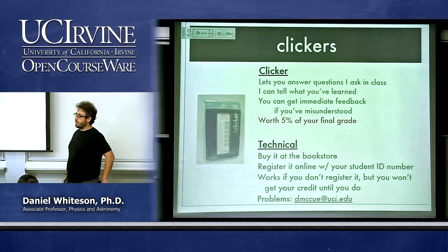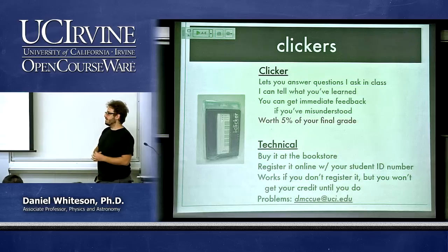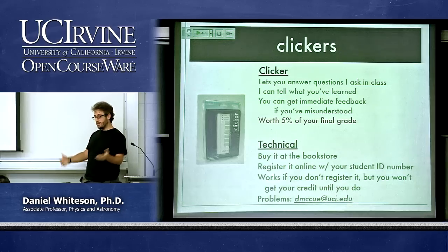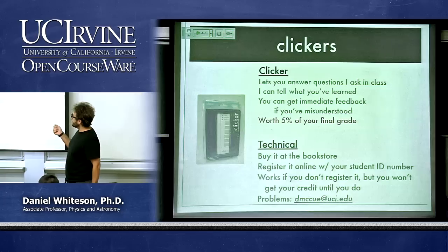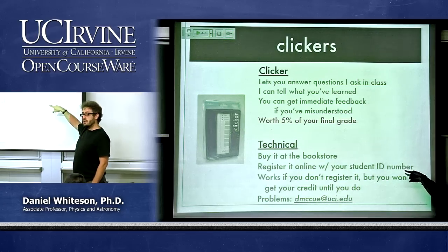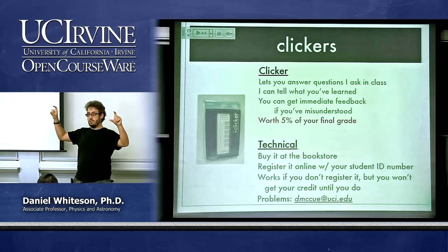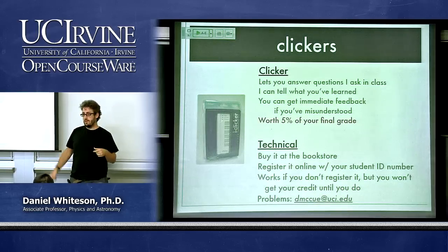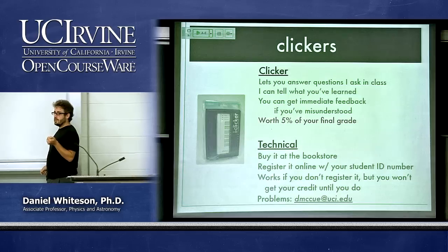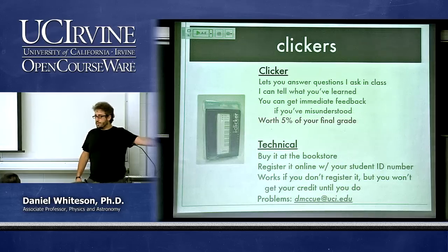If you respond to about 80% of the questions in one lecture, you get credit for that class. You need to buy the clicker and register it online with your student ID number, so the system knows who has which clicker. The base station here receives messages from your clickers. If you have technical problems, there's a dedicated campus contact — Mr. Clicker — who handles these issues; don't email me technical clicker questions.